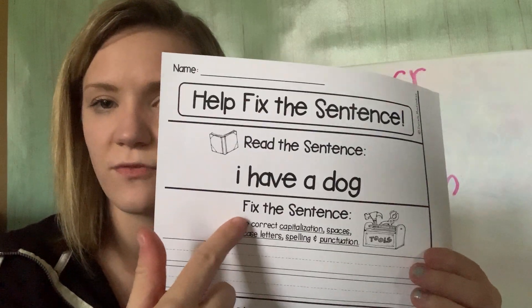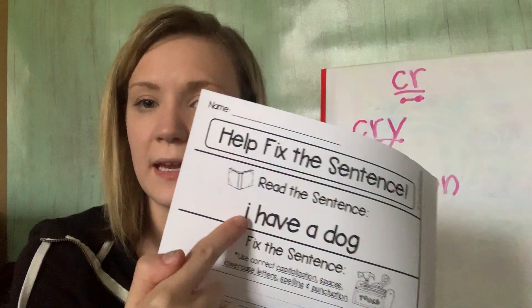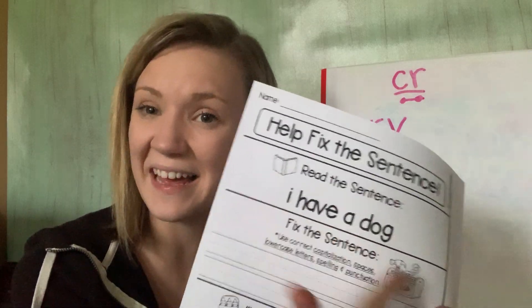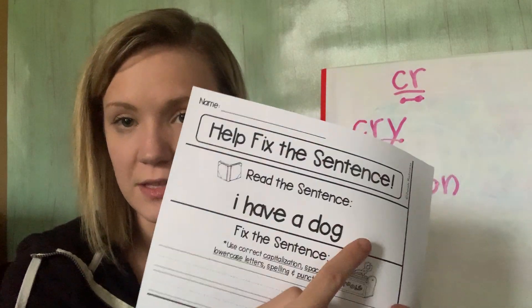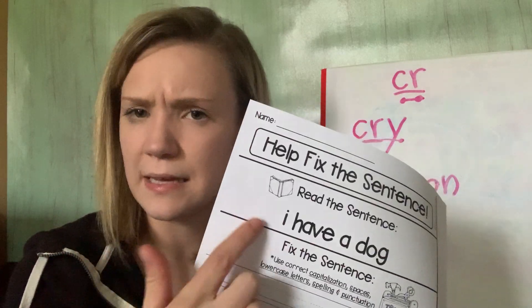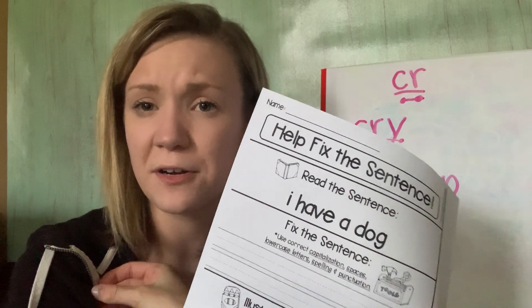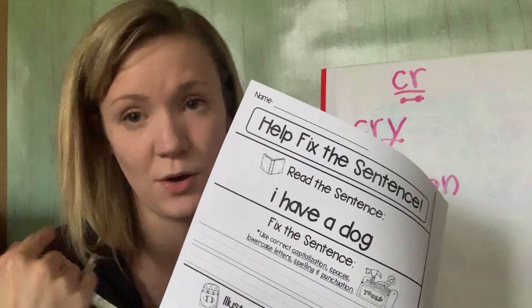Now your next part, it says fix the sentence. So you're going to be looking for a capital letter at the beginning of your sentence. Then the rest of the letter should be lowercase. And then you're going to look for punctuation at the end of your sentence. So remember your choices are a period exclamation mark or a question mark. I have a dog. Is that a question mark kindergarten? It isn't. So question mark is off the table. Now you can choose between a period or an exclamation mark.